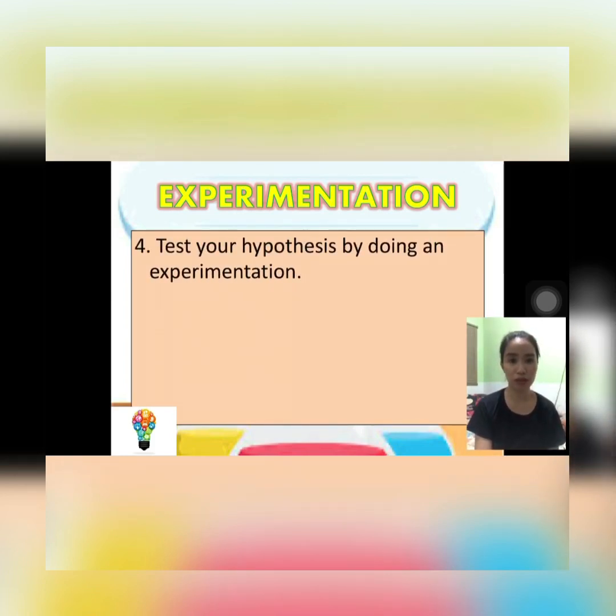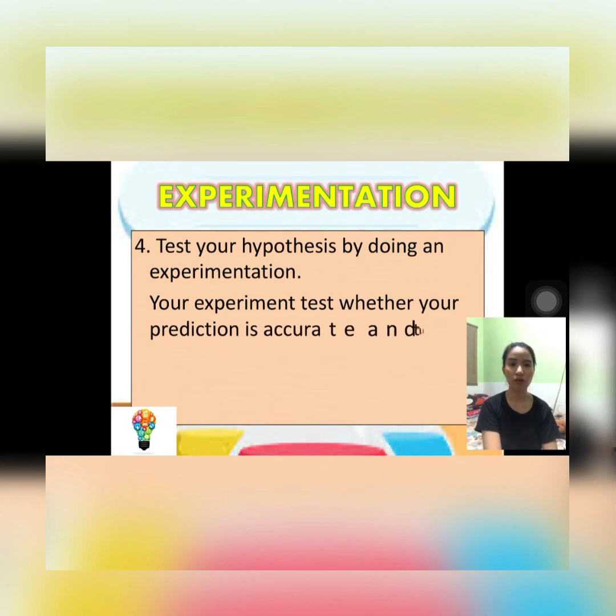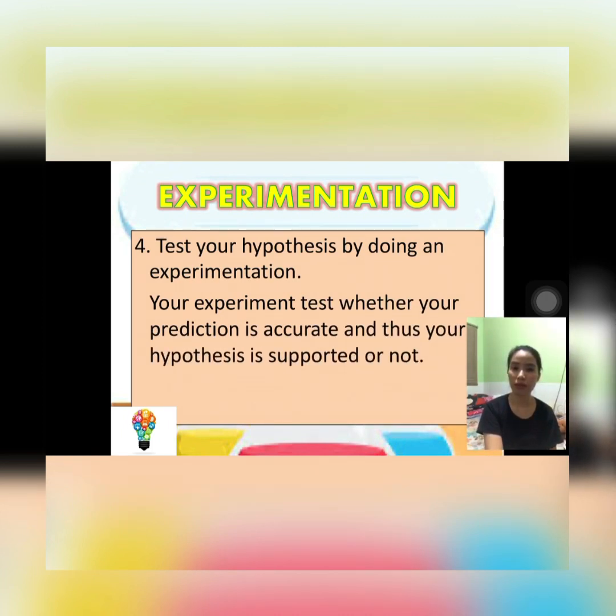After hypothesis, we have experimentation. Some people think that experiments are just experiments, but it is a part of the scientific method. What is the purpose of experimentation? It is to test your hypothesis. You have to test your hypothesis to know if it is effective or not, and you can tell whether your hypothesis is right or wrong — that is the purpose of experimentation.